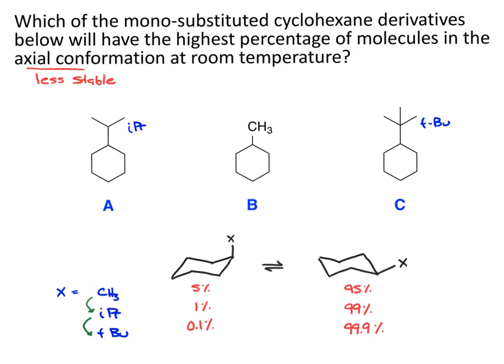So coming back to our question: none of these have a high percentage in the axial conformation. But of the three, the methyl group would have the highest percentage of molecules in the axial conformation at any given time.